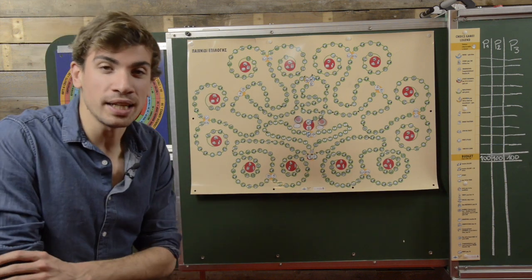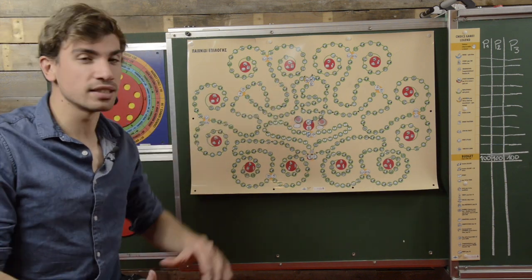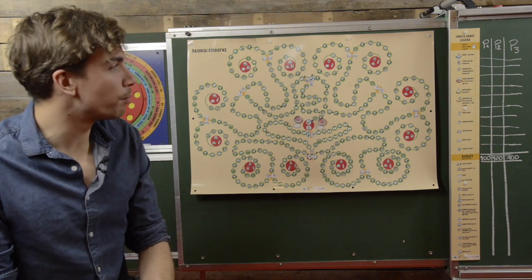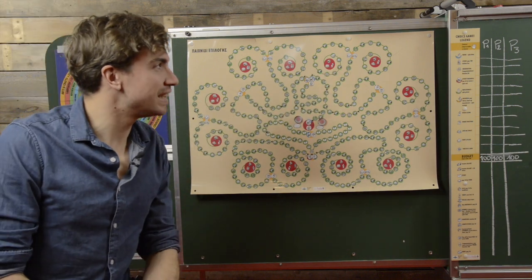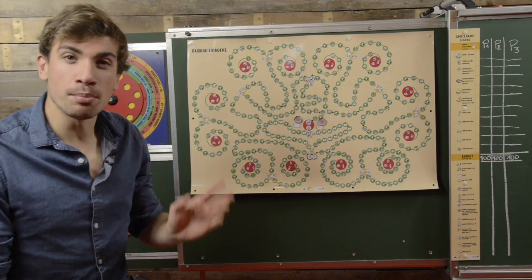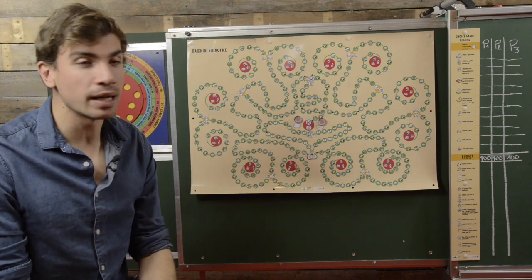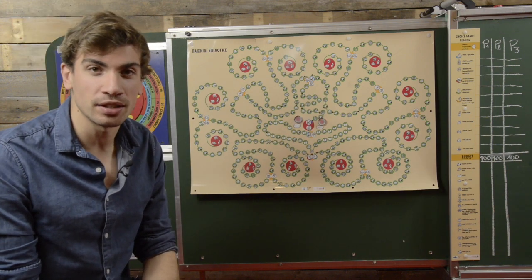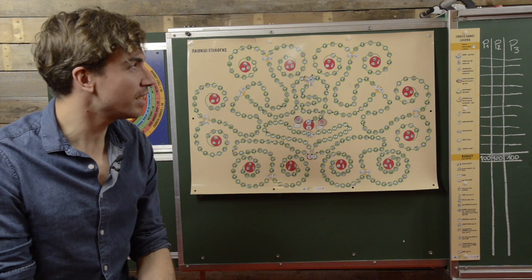Now what do you need to play the choice game? You will need the big magnetic choice game board, you'll also need the choice game legend, make sure that you have some blackboard space available next to the panel so that you can draw the table as you can see on the blackboard.